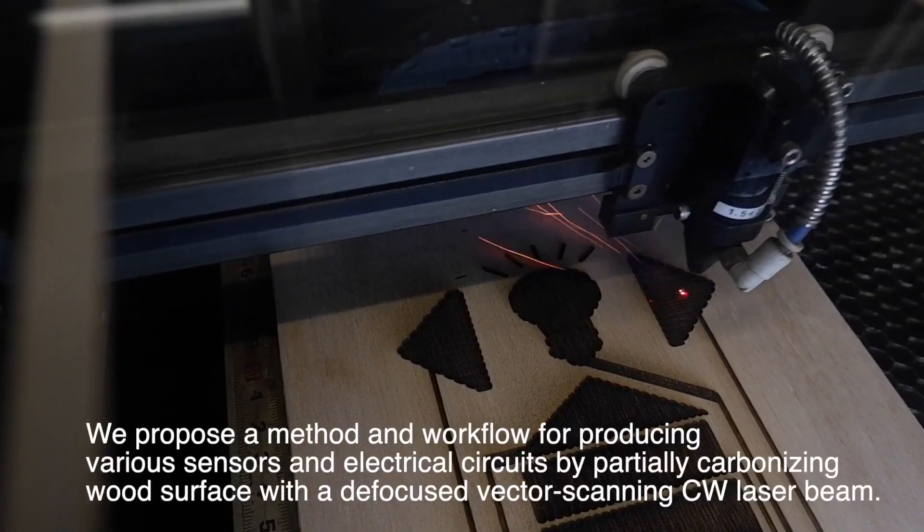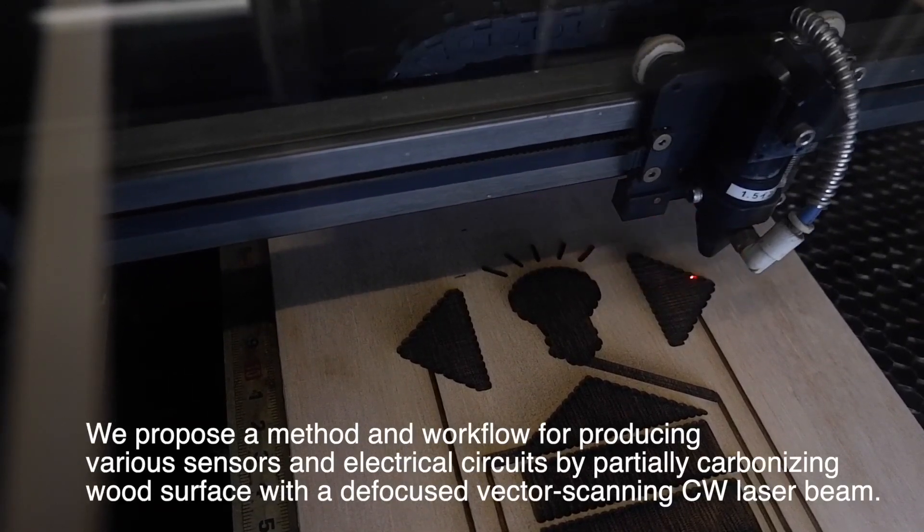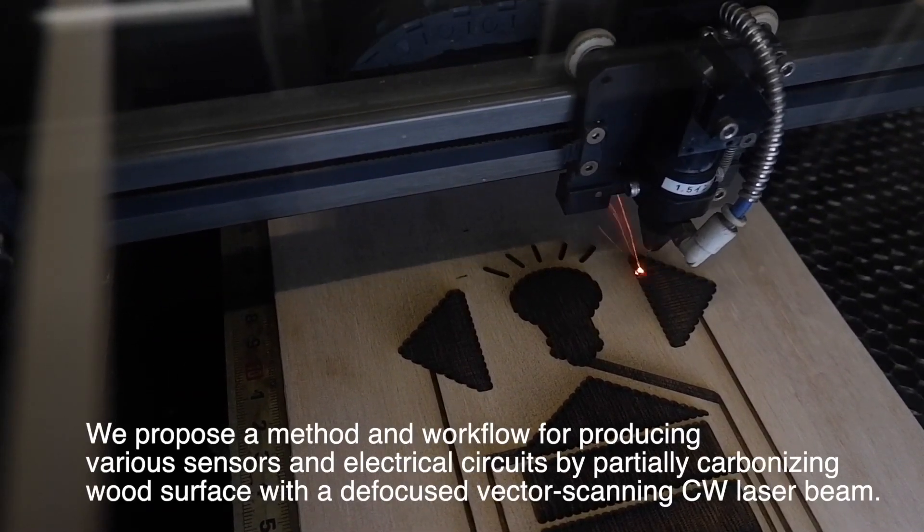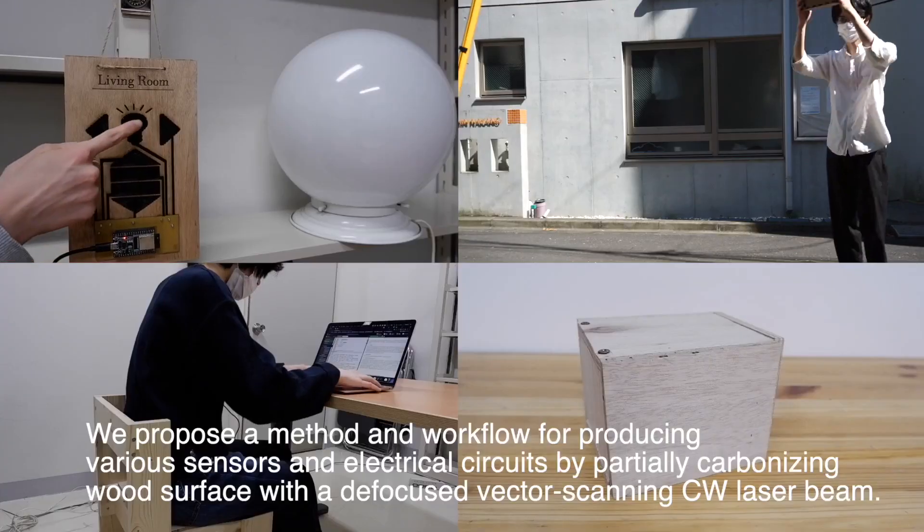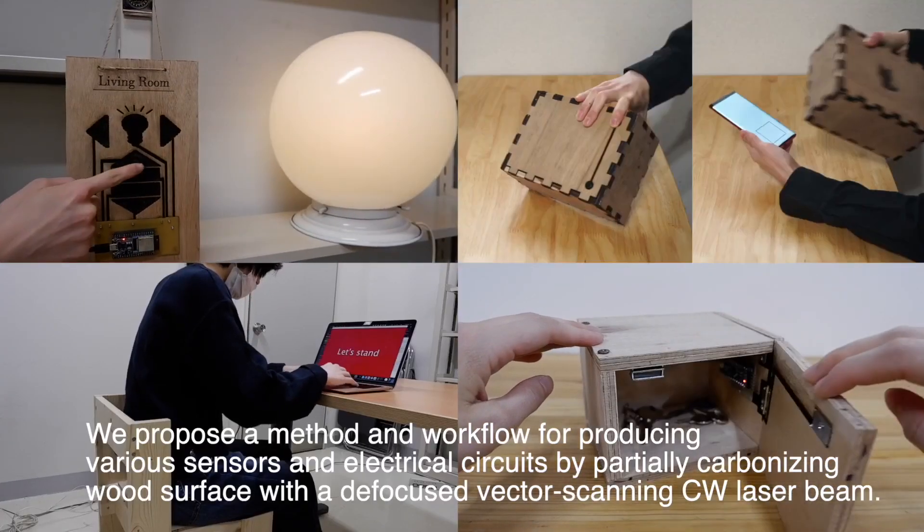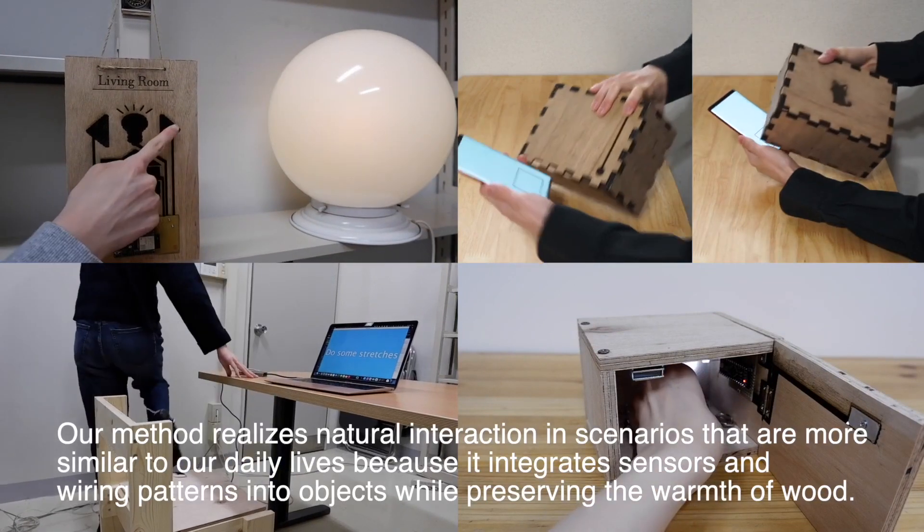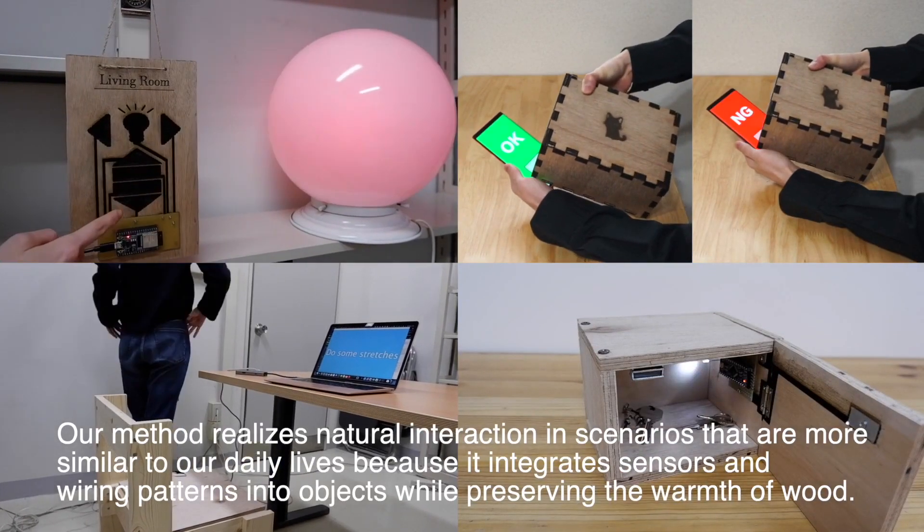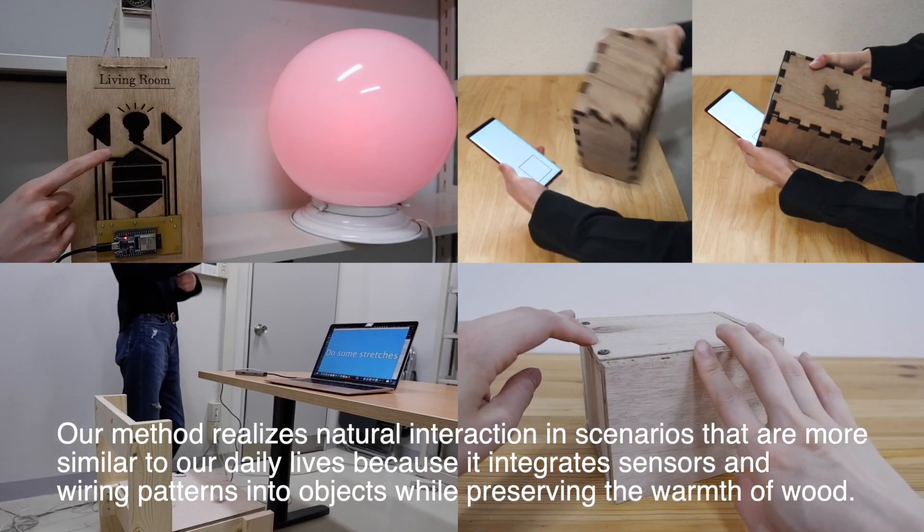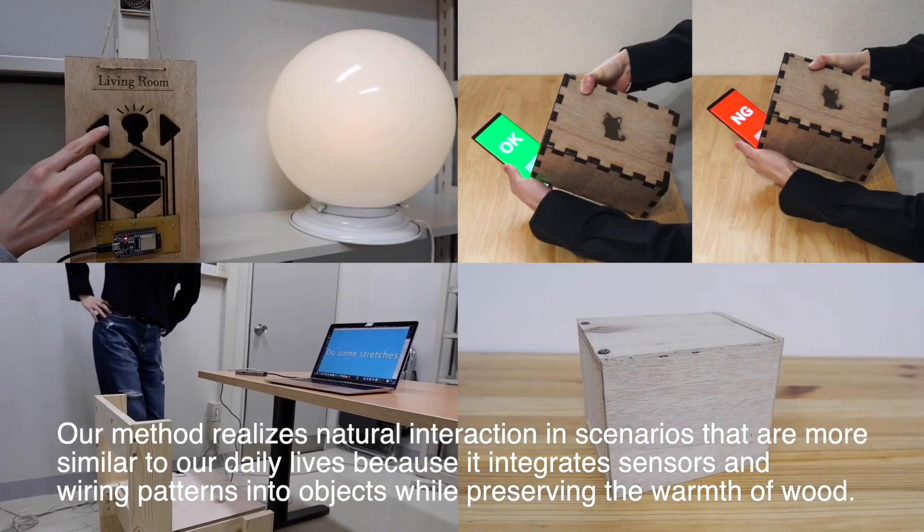We propose a method and workflow for producing various sensors and electrical circuits by partially carbonizing wood surface with a defocused vector scanning CW laser beam. Our method realizes natural interaction in scenarios that are more similar to our daily lives because it integrates sensors and wiring patterns into objects while preserving the warmth of wood.